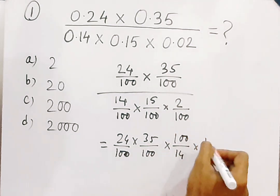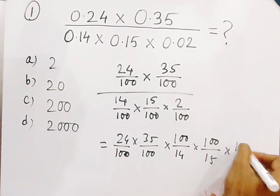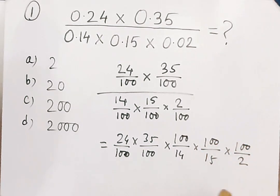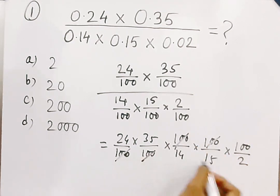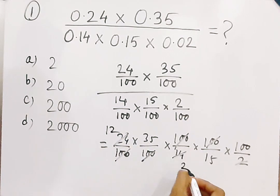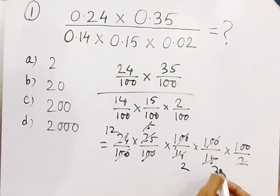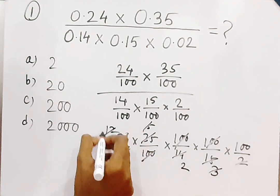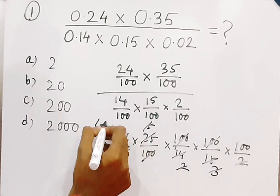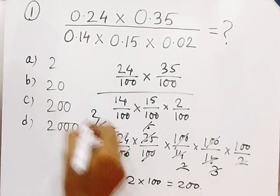Now we have 24/100 × 35/100 × 14/100 × 15/100 × 2/100. After cancellation: 100s cancel out, 24 reduces by 12, 14 reduces by 7, 35 reduces by 5, giving us 2 × 100 equal to 200 as the answer.